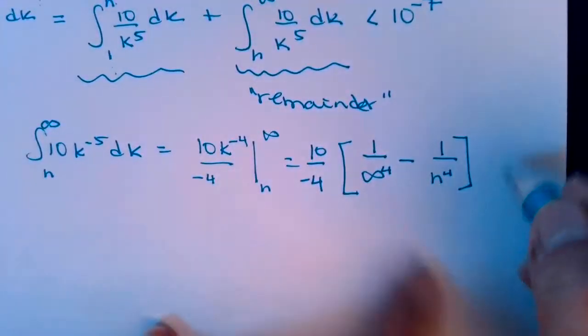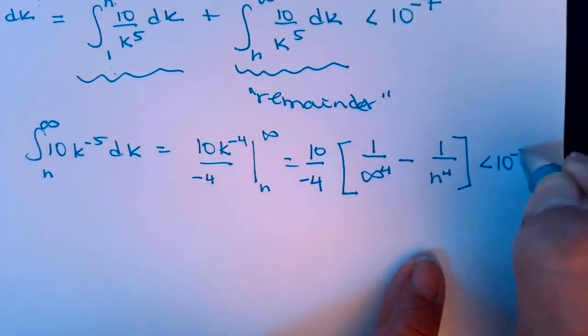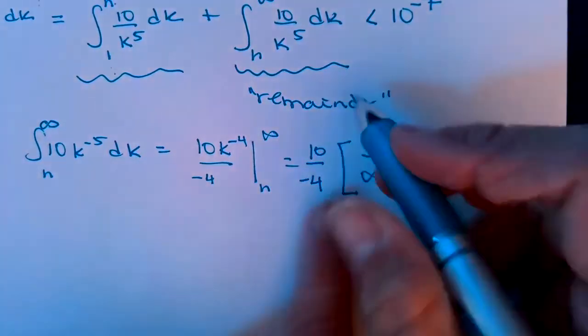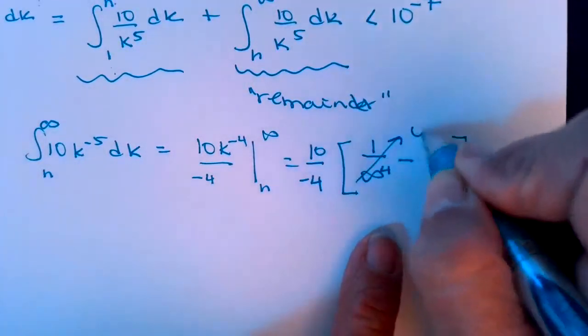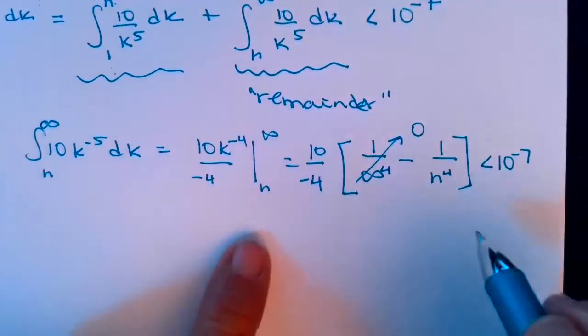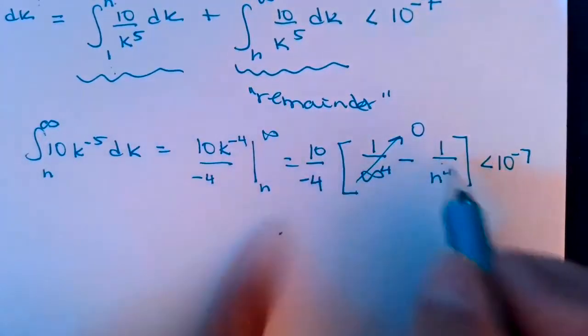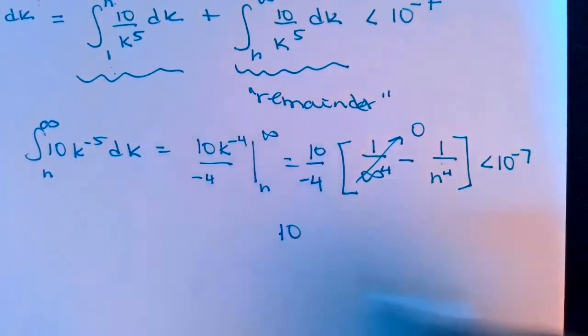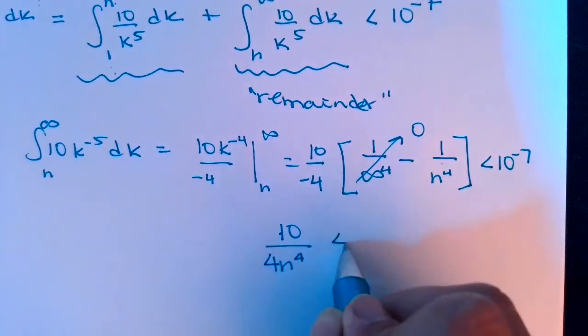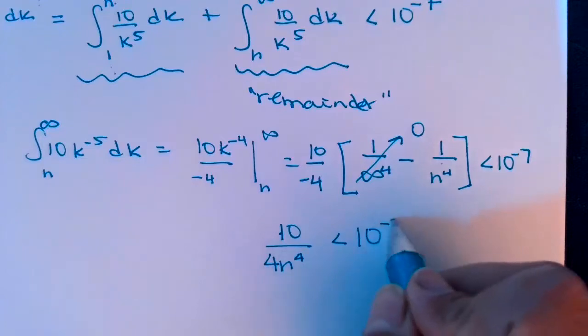And I need for this to be less than 10 to the negative 7. Well, 1 over infinity to the 4th, that's a 0. So now I have—and the 2 negative will make that positive, that's nice—so I have 10 over 4n to the 4th needs to be less than 10 to the negative 7.